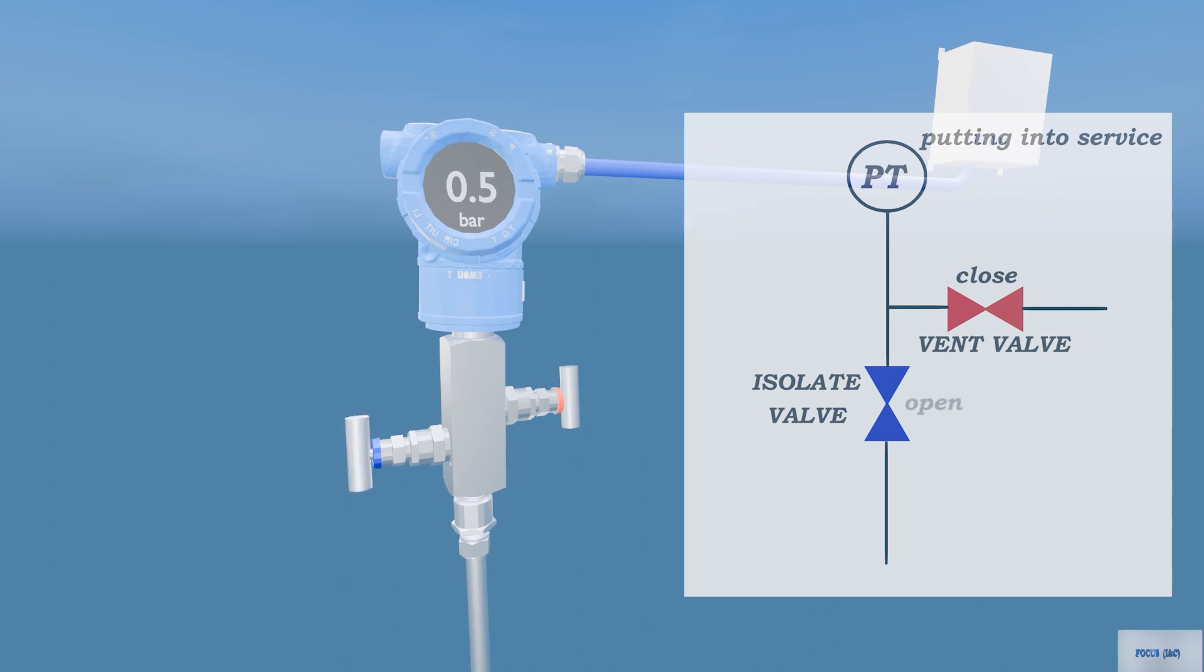Open the isolate valve by rotating the valve in the counterclockwise direction. A two-valve manifold is now in service.